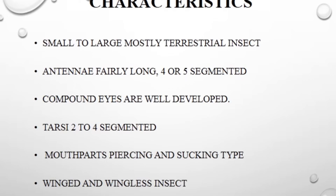Similarly, the tarsus has 2 to 4 segments. The life cycle of insects belonging to order Hemiptera is incomplete. In this order, insects may be winged or wingless.